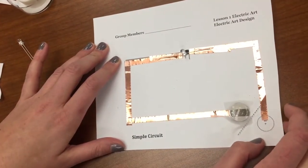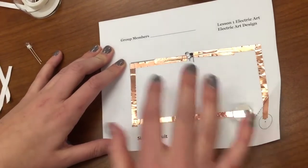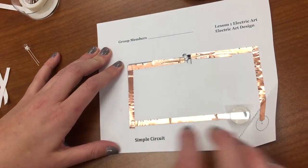So that's how you're going to make your first simple circuit. For the parallel and series circuit you're just going to add two more lights and follow the templates that are there.